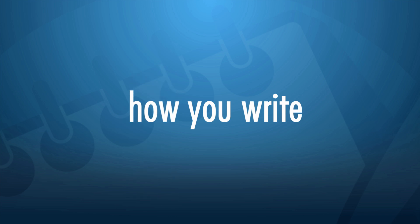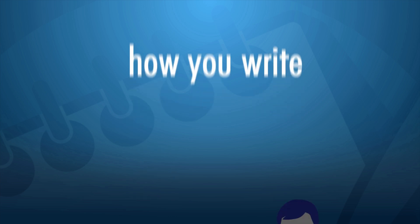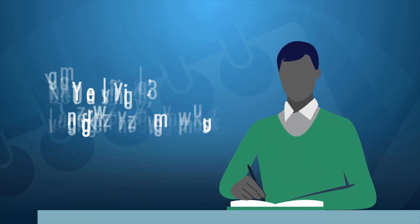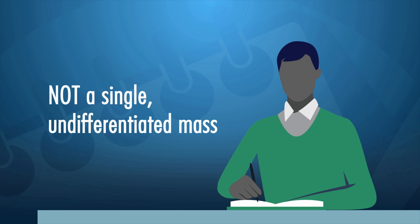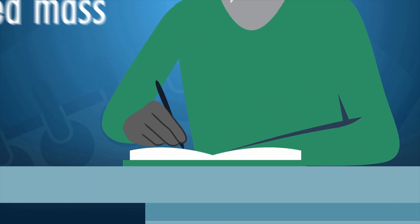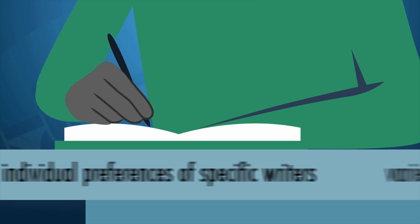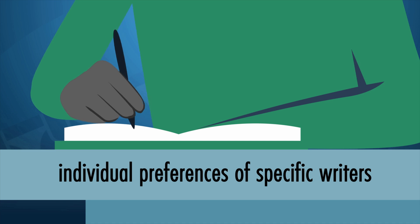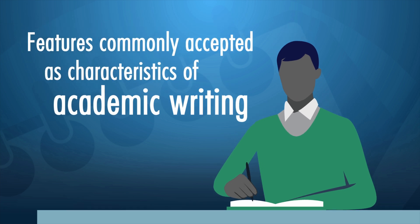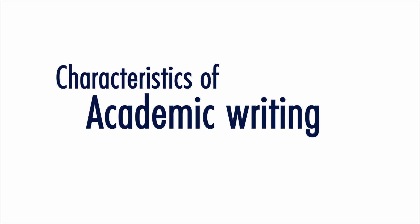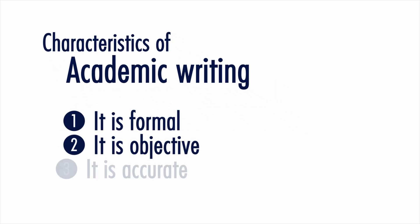In the setting of academic writing, what you write and how you write it is important. Academic writing is not a single undifferentiated mass, but varies according to conventions followed in different disciplines and according to individual preferences of specific writers. There are however a number of features commonly accepted as characteristics of academic writing. This video briefly deals with formality, objectivity and accuracy.